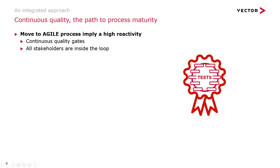Now that we have a good process in place, we need to understand how to make it very efficient. Building a nice KPI trend is a good thing, but if you don't act on these KPIs it's a nonsense activity. This is what we're talking about: continuous quality process. A lot of projects are moving to agile, but regardless, everybody is looking for high reactivity. Putting in place continuous quality gates is a way to involve all stakeholders in the loop and continuously track every change made to the product.